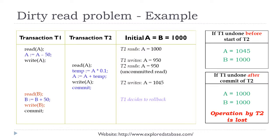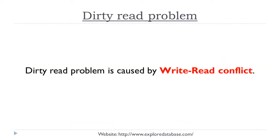If T1 had been undone before T2 started, there would be no problem — T2 would see the old value of A and produce a consistent result. But since T2 committed after reading T1's uncommitted value, and T1 then rolled back, the operation performed by T2 is lost. This is the problem caused by dirty read, which is caused by a write-read conflict: one transaction writes a value and before committing, a second transaction reads that value.